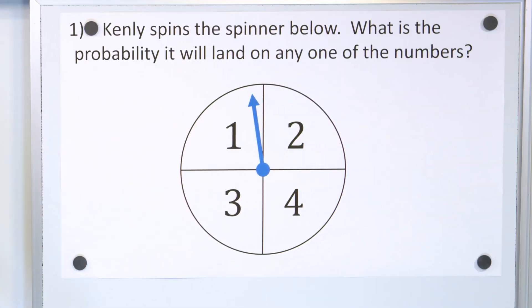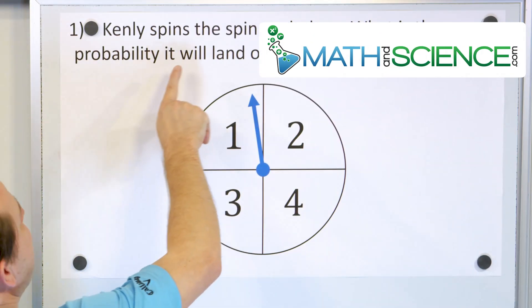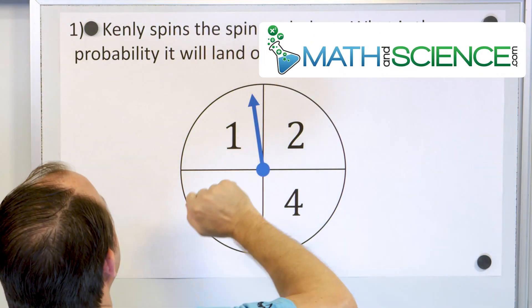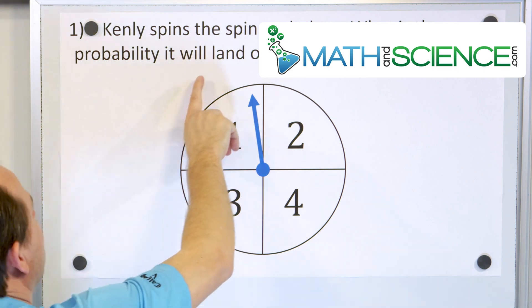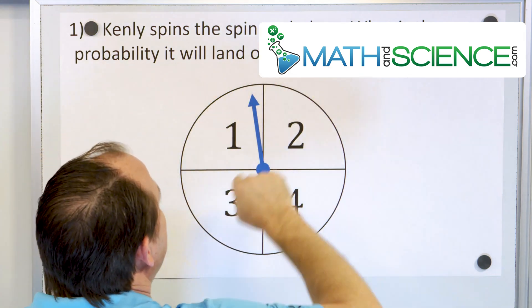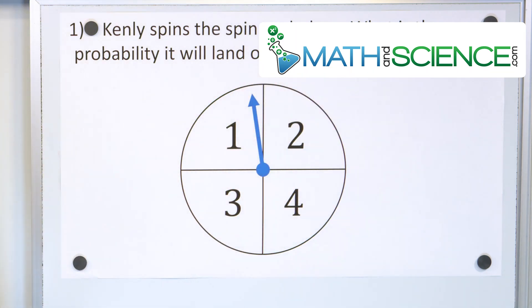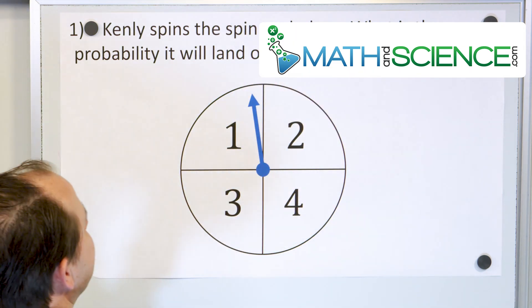Let's take a look at problem one. Kenley spins the spinner below. What is the probability that it will land on any one of the numbers? Any one of the numbers.